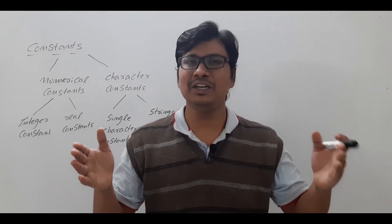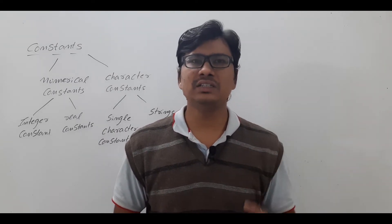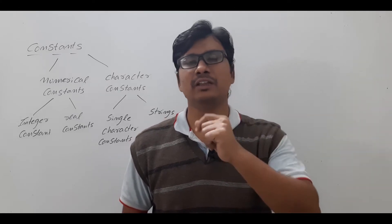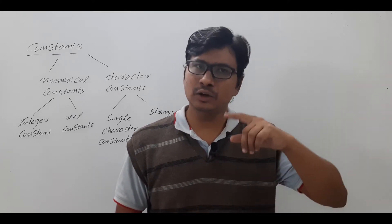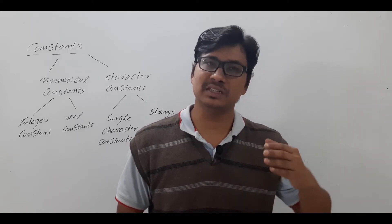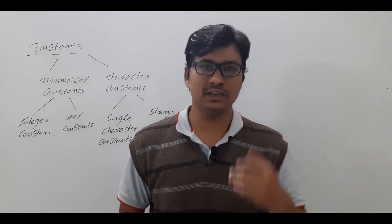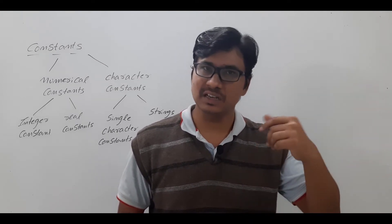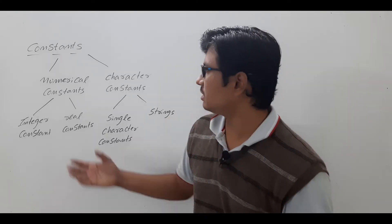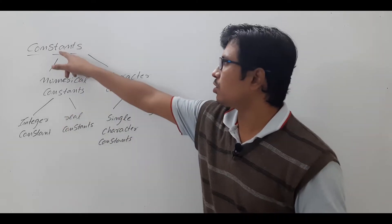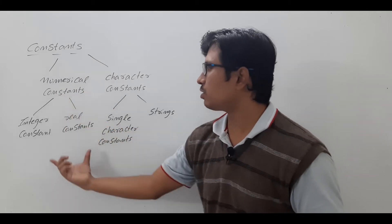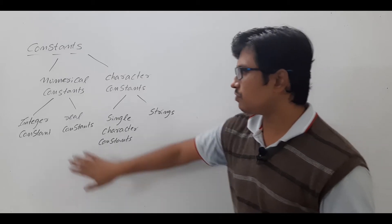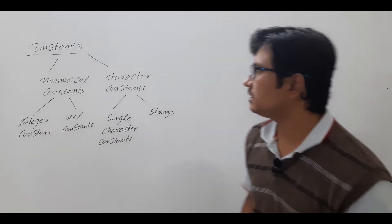Please watch the complete video for better understanding. Constants are broadly classified into two types: numerical constants and character constants. Numerical constants are again classified into two types — integer constants and real constants. Character constants are again classified into two types — single character constants and strings. In the diagram you can see the constants classified into two types, and each is further divided.